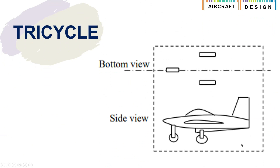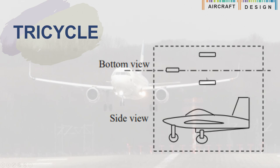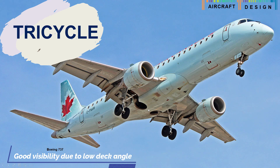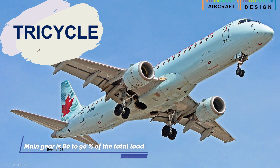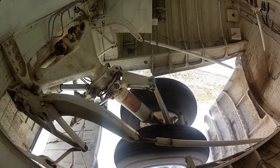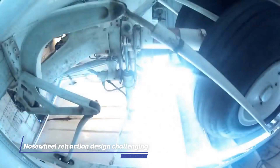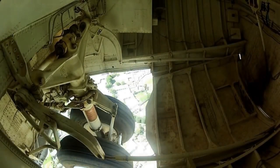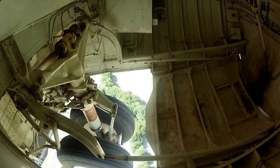The tricycle configuration is the most widely and commonly used in general aircraft. It provides good ground control capability during crosswind and good visibility because of its low deck angle, unlike the tail dragger. The main landing gear carries about 80 to 90 percent of the total load, and the nose gear carries around 10 to 20 percent. One disadvantage is that nose wheel retraction can be a challenge because of limited space, and the steering mechanism is a bit complex to design.